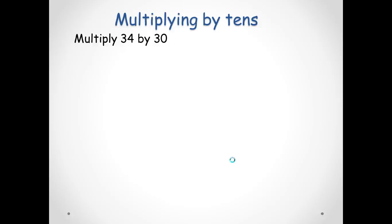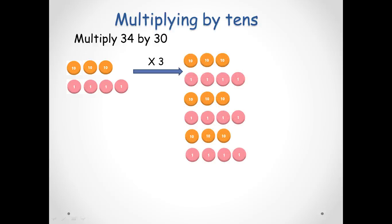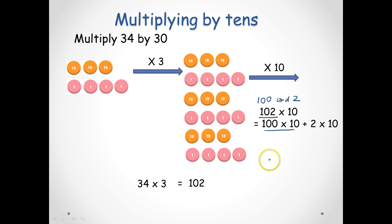Multiplying by tens — let's multiply 34 by 30. We multiply by 3 first: 34 times 3 gives us 102. Then when we multiply the 102 by 10, we can split it: 100 multiplied by 10 and 2 multiplied by 10. So 102 times 10 is 100 times 10 plus 2 times 10, which is 1,000 plus 20, giving us 1,020.